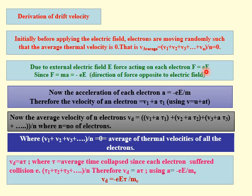Therefore, drift velocity formula Vd = A·τ. This is the main formula. Since A = −eE / m, substituting this value: Vd = −eE·τ / m. This means drift velocity is directly proportional to the relaxation time. In one or two marks questions, you may be asked to write the expression for drift velocity in terms of relaxation time: Vd = −(eE/m)·τ.